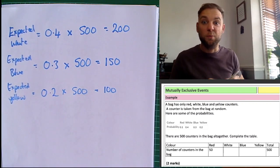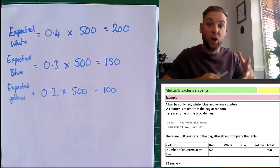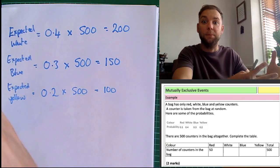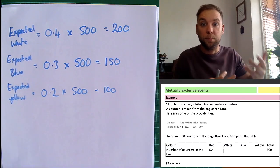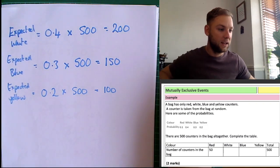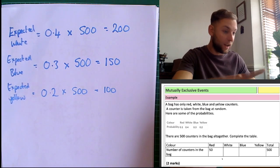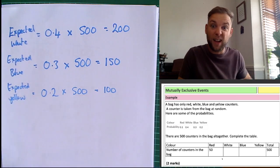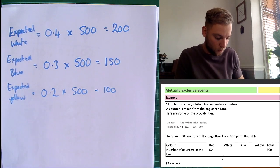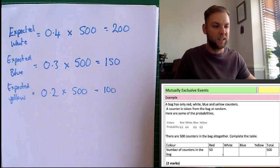That's worth two marks — we're just finding expected outcomes using the table from mutually exclusive events. We can also check red: 0.1 times 500 equals 50, which was already given to us.